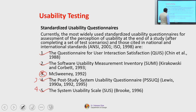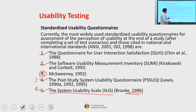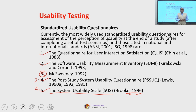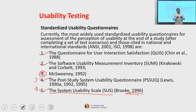Out of these four scales, the System Usability Scale is the most widely used. If you go to research papers, you would see that a lot of researchers use the System Usability Scale by Brooke, which was published in 1996. These standardized usability questionnaires are used for assessment of the perception of usability at the end of the study — how your users perceive the usability of a particular product.